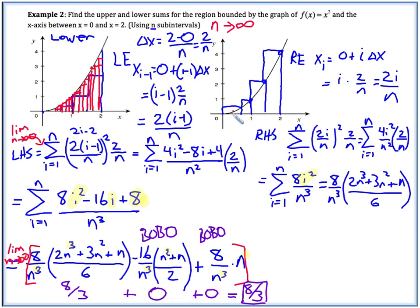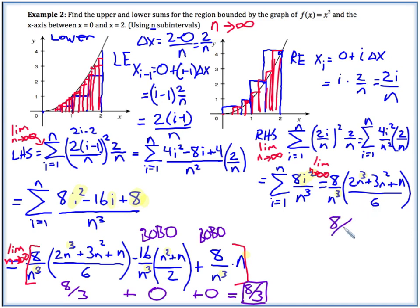Again, we think about adding more and more intervals until we get to infinity. We want the limit as n goes to infinity of the sum we found. In this case we just have two terms being multiplied, and the exponents are the same — n³ on both top and bottom — so applying the rule gives us 8 times 2 over 6, which is 8/3. So the limit of the upper sum also equals 8/3.